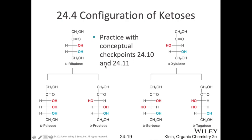As we insert more carbons and extend our carbon chain, we get more chiral centers and increase our number of possibilities. For pentose ketoses, we have two chiral centers, giving us 2² = four different isomers — two D isomers shown here, plus their mirror images. For hexose ketoses we have eight possible isomers, with four D isomers shown. Don't stress about memorizing the R and S configurations of every possible sugar — you'll be given a reference on a quiz or exam.